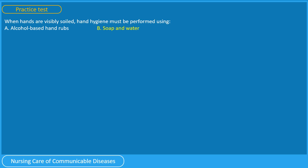If you answered B. Soap and water, you are correct. In donning, which must be worn first? A. Mask, B. Gloves, C. Goggles, D. Gown. You have 5 seconds.